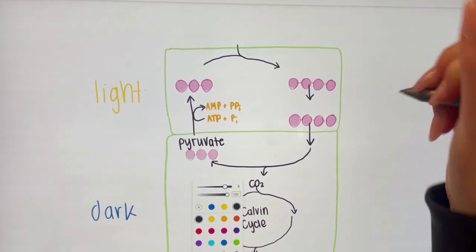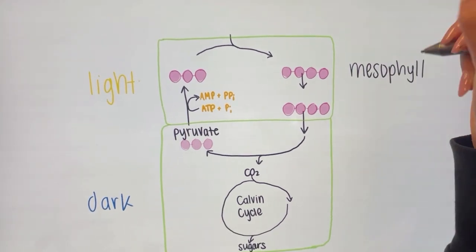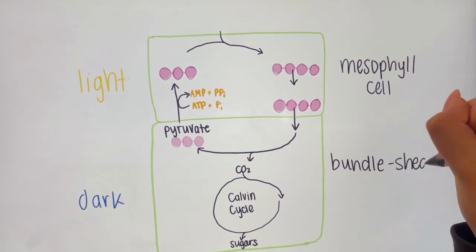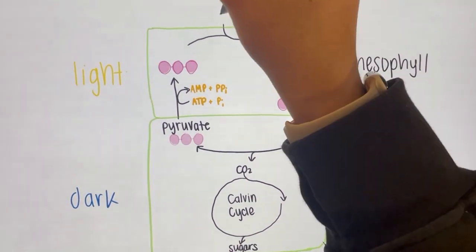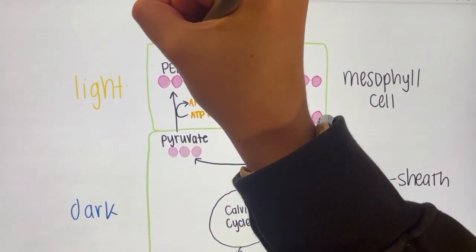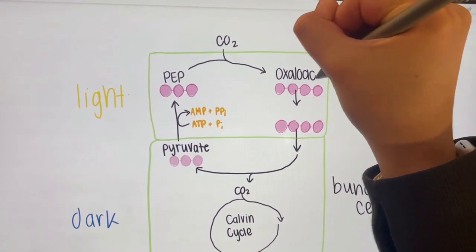This process looks like this: CO2 is fixed in the mesophyll cells to form oxaloacetate by the enzyme PEP carboxylase. Oxaloacetate is converted to malate, then transported to the bundle sheath cells. Malate will then break down, releasing CO2, increasing its concentration inside of the cell, disallowing photorespiration.